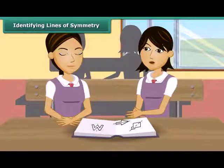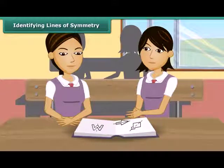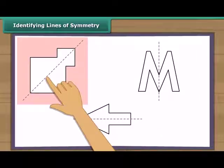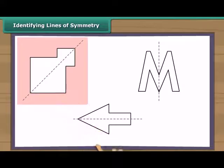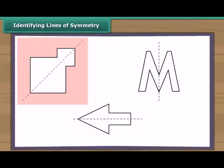Priya, can you now identify the line of symmetry in these designs? I will try. In this figure, this is the line of symmetry, or axis of symmetry. How? When we fold this design this way, the two parts so formed will coincide. So this is the line of symmetry.